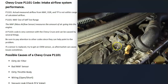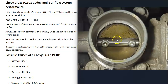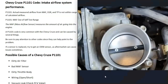Another common cause of this code is a dirty throttle body. When throttle bodies get dirty with buildup, it can throw off all the sensors because of the airflow passing through it. Cleaning the throttle body can often solve the problem. You use throttle body cleaner in a spray can, spray it inside, and use a small toothbrush to clean off the buildup. You can remove the throttle body for a detailed cleaning, or sometimes clean it while it's still attached.